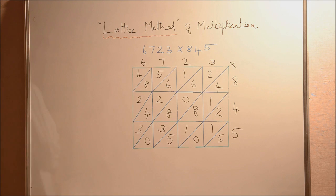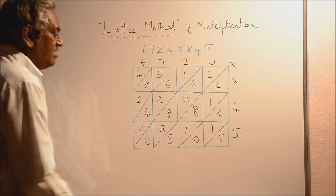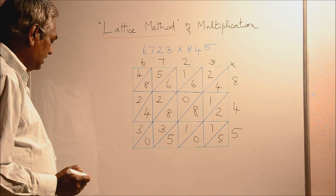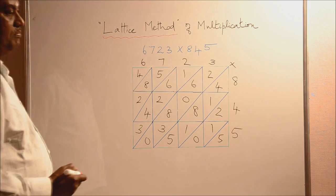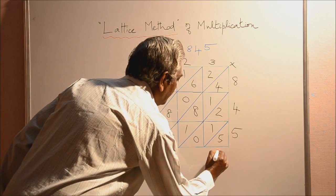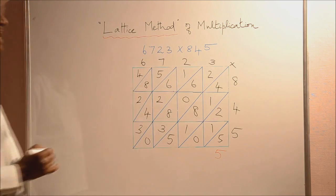Now, we will do this method to find out the answer. Now we are going to add these numbers diagonally. First, in this diagonal, we get 5. Write 5 there.